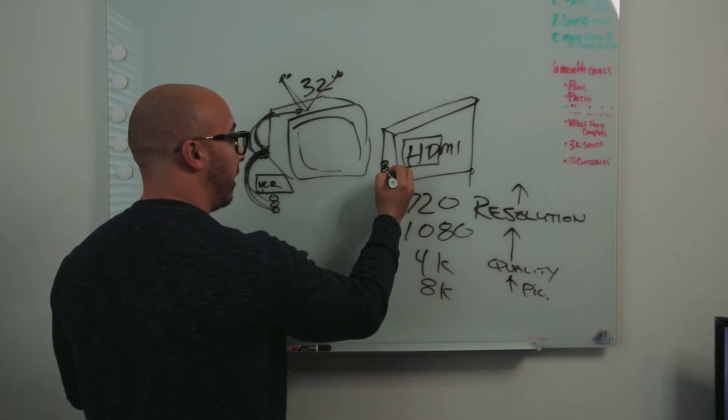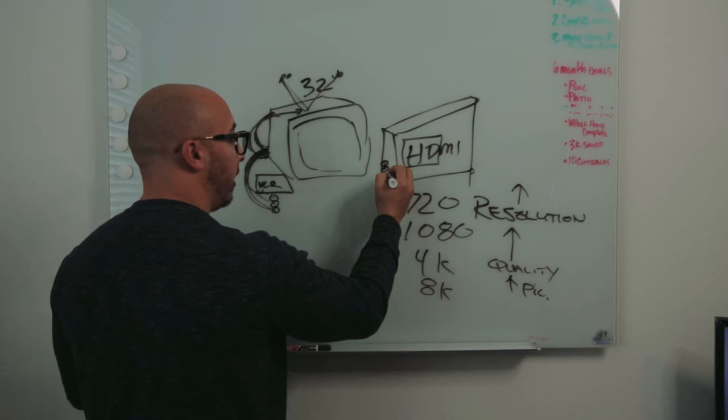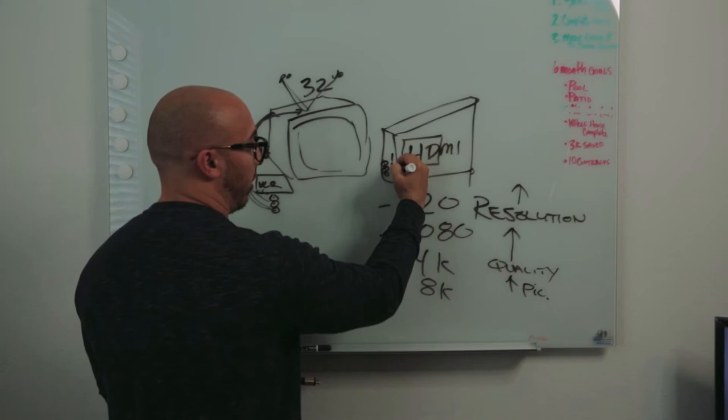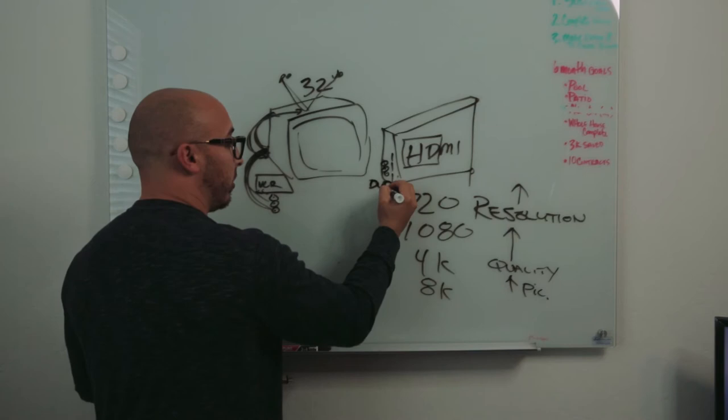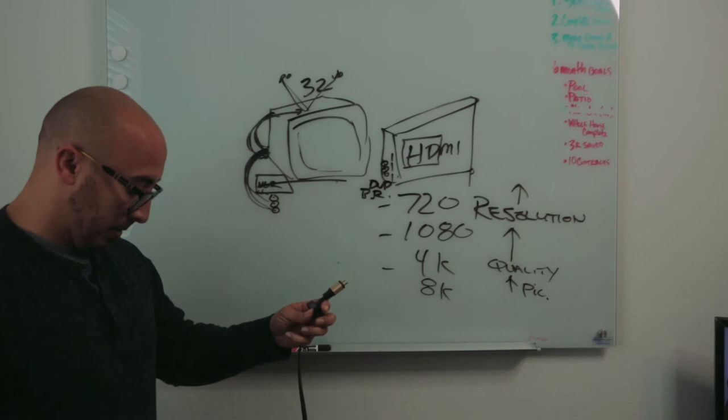Some of them still have these red, white, and yellow things on them. Some of them don't even anymore, but they have more HDMI ports. So you have an HDMI port, HDMI, HDMI, and you plug into this and you can do now your DVD player. So that kind of takes that part out. And then they have a Blu-ray player. But here's the thing.